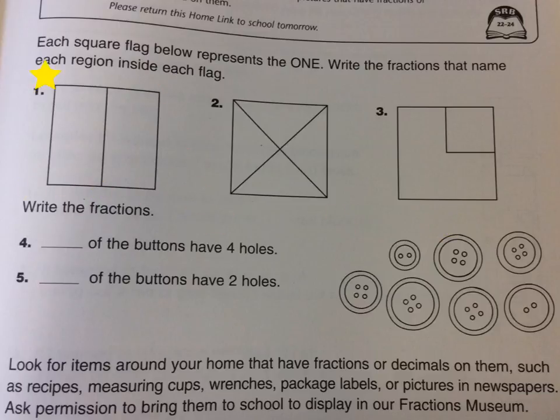So each of these is one. The square equals one. What is the fraction inside each place here? I think the first two are pretty simple, but let's just go through them quickly. So here there are two equal parts to this shape. So each one is going to be one half of the shape.